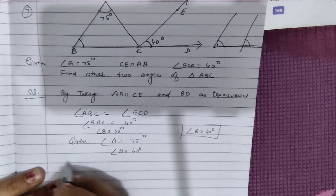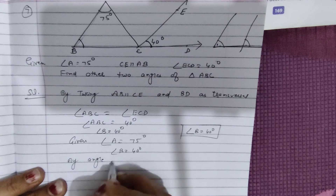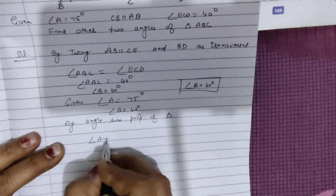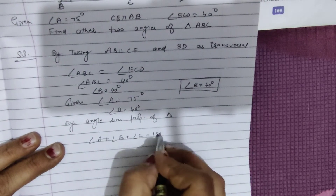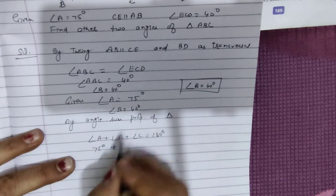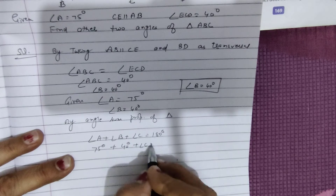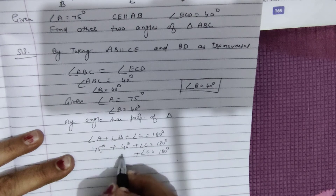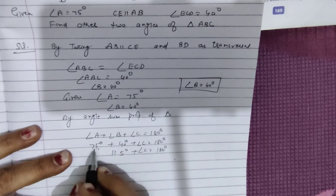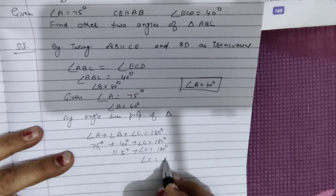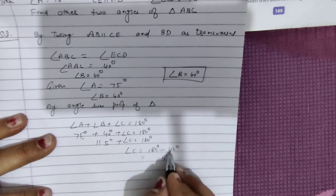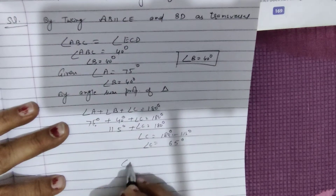Now angle C, by angle sum property of triangle: angle A plus angle B plus angle C is equal to 180 degrees. Angle A is 75, angle B is 40 degrees. Angle C is not given. So angle C equals 180 minus 115, which is 65 degrees.